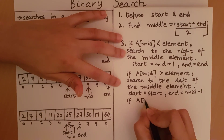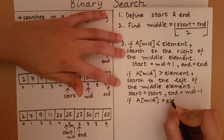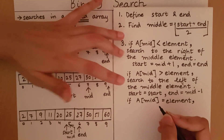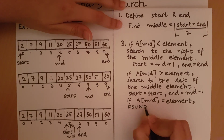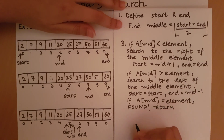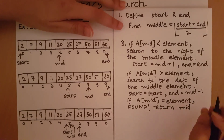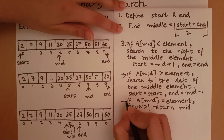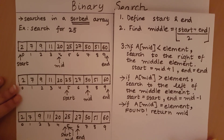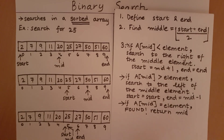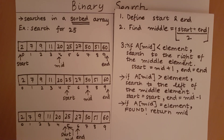Once we find that the middle element equals the element we are searching for, the element has been found, and we return the index at which it was found — which is the middle index. So we have three cases: search to the right of the middle, search to the left of the middle, and the middle element itself is the element we were looking for. This is how binary search works when the element actually exists in the array.